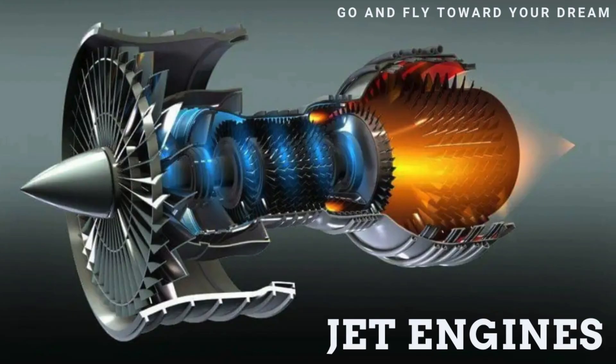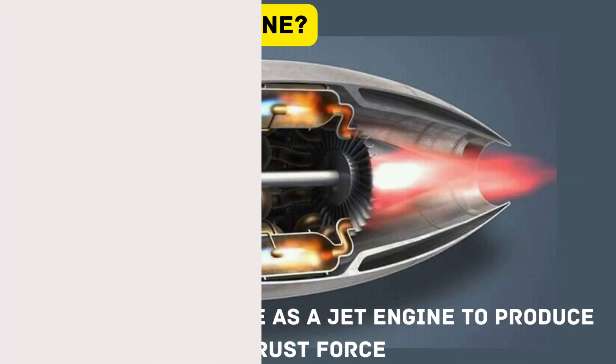Jet engines power modern airplanes, helping them soar at hundreds of miles per hour high above the ground. But how exactly does a machine turn air into thrust strong enough to lift a massive metal tube into the sky?